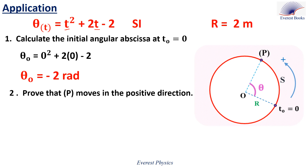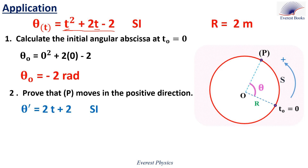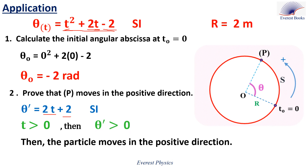Part two: prove that P moves in the positive direction. To prove this, we must show that θ' — the time derivative of θ — is positive. Since θ = t² + 2t − 2, differentiating: the derivative of t² is 2t, the derivative of 2t is 2, and the derivative of −2 is zero. So θ' = 2t + 2. According to this expression, θ' is positive for any value of t, therefore P moves in the positive direction.